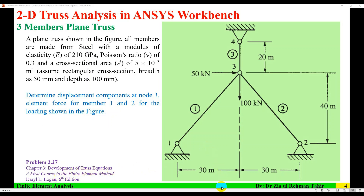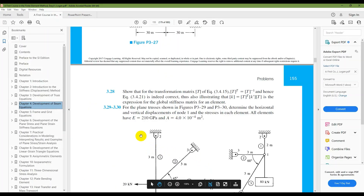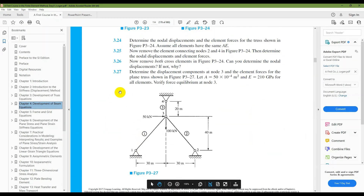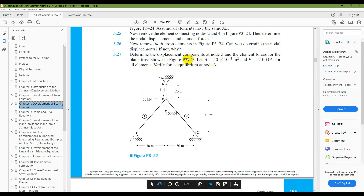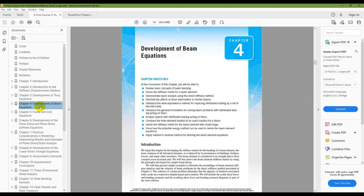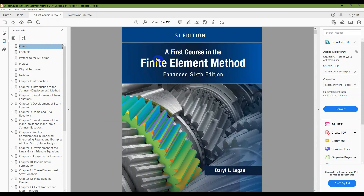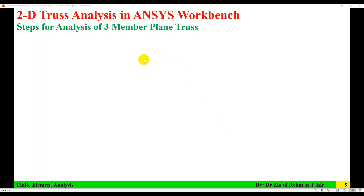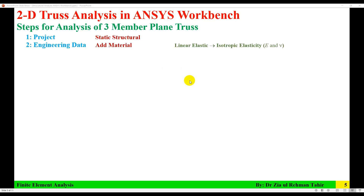Specifically, this is Problem 3.27, modified slightly. It is from Chapter 4, 'Development of Beam Equations,' from 'A First Course in Finite Element Method' by Daryl Logan, 6th edition. The first step for the analysis of this three-member plane truss in ANSYS Workbench is to start a static structural project.